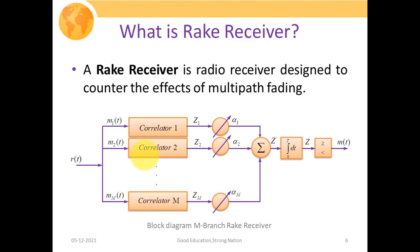So what is a rake receiver? A rake receiver is a radio receiver which has been designed to counter the effect of multipath fading. To understand how it does that, we need to look at its block diagram structure — what it is made up of and how it nullifies the effect of multipath fading.